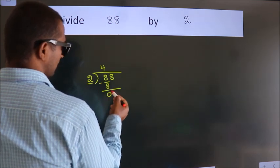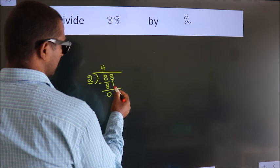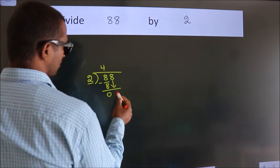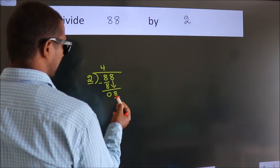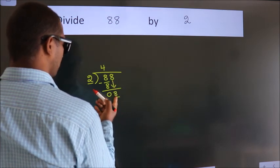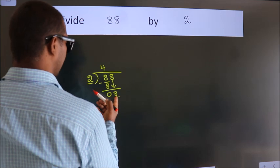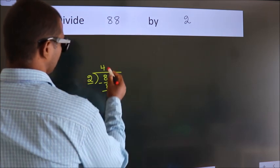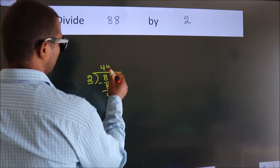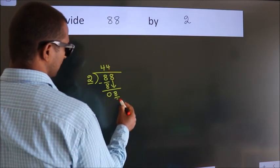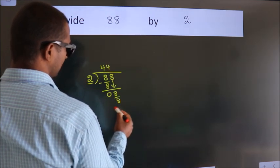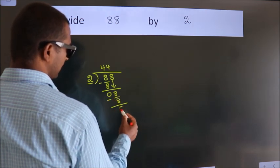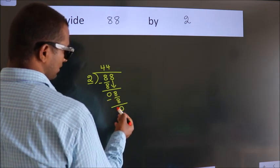After this, bring down the beside number. So, 8 down — 8. When do we get 8? In the 2 table, 2 fours are 8. Now we subtract — we get 0.